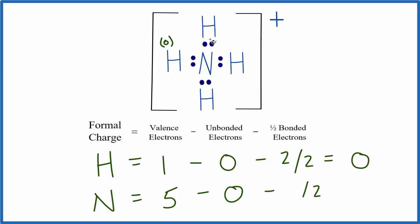We have two, four, six, eight. So five minus zero minus four, that gives us a plus one. So the formal charge here on the nitrogen is plus one.